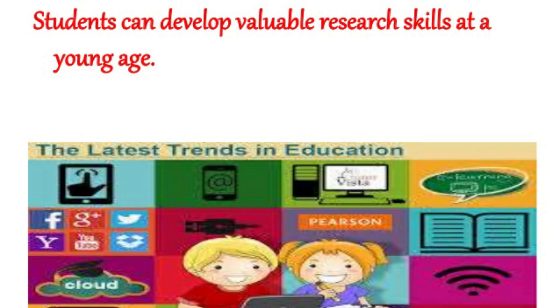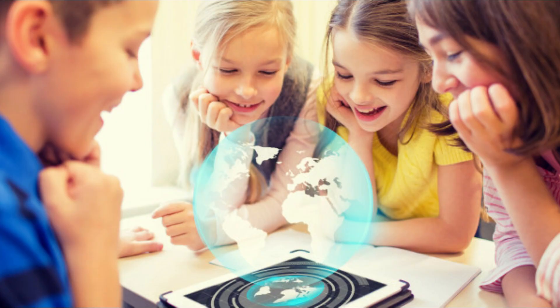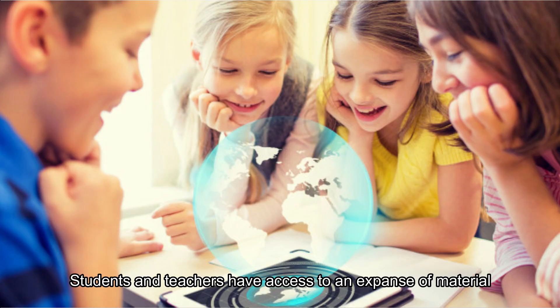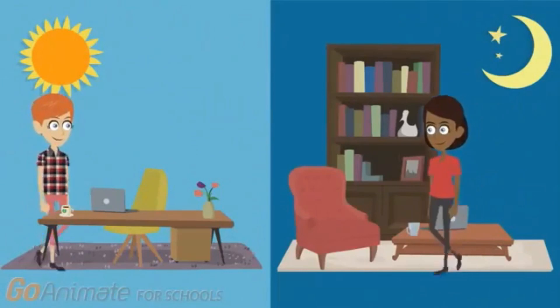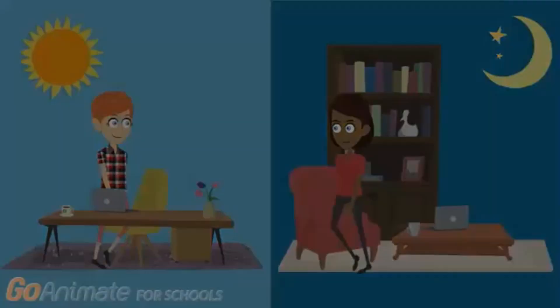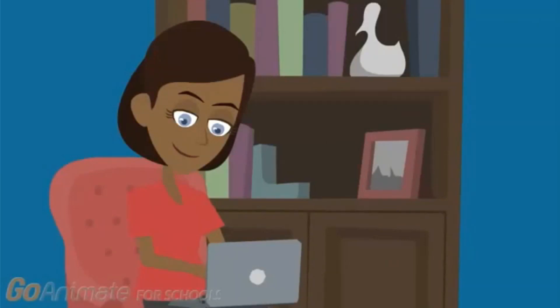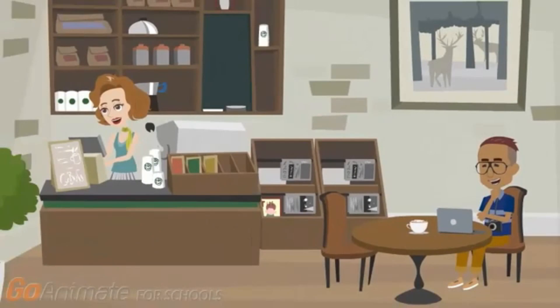Number two, students can develop valuable research skills at a young age. Technology gives students immediate access to an abundance of quality information, which leads to learning at much quicker rates than before. Third, students and teachers have access to expansive material. There are plenty of resourceful, credible websites available on the internet that both teachers and students can utilize, providing a variety of knowledge that doesn't limit students to one person's opinion. Fourth, online learning is now an equally credible option. Some students work better when they can go at their own pace, and online education is now accredited and has changed the way we view education.